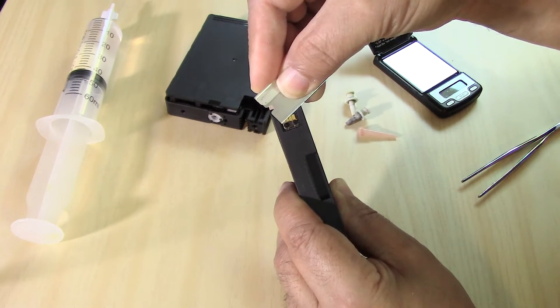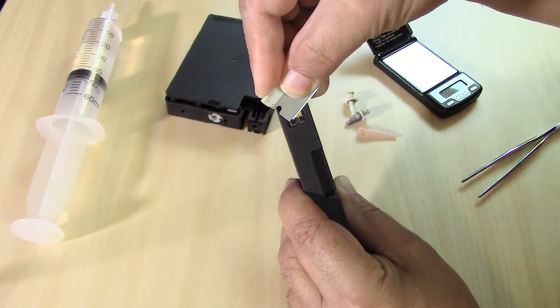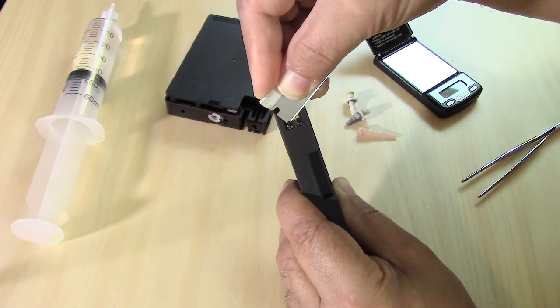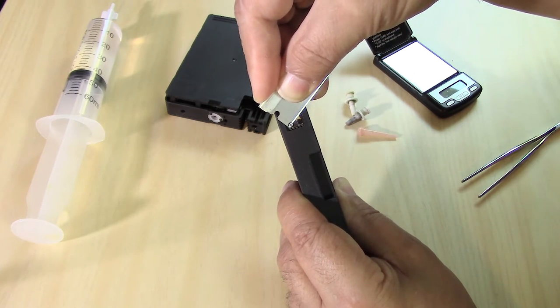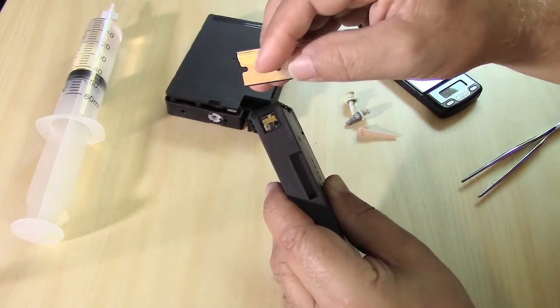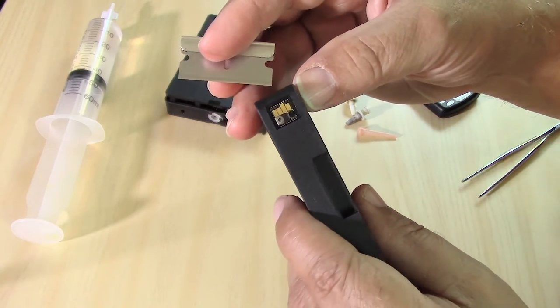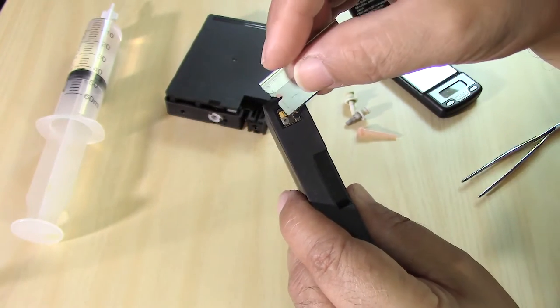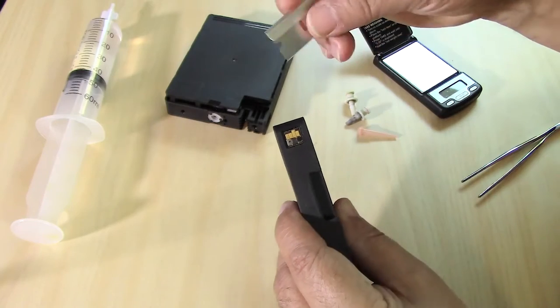It is best to use probably an Exacto knife, and preferably one that is nice and fresh and sharp, because this is a very delicate little operation. As you see, basically what we did is we just shaved that down to nothing. This is the surface of the actual chip.